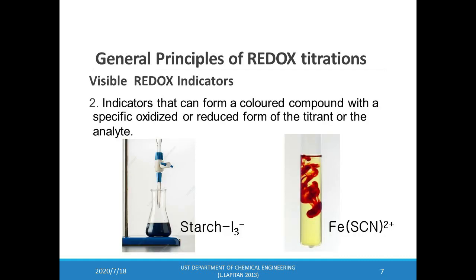The second classification of redox indicators are compounds that form a colored compound with a specific oxidized or reduced form of the titrant or analyte. Starch, for example, forms a dark purple complex with triiodide ions. We can use this distinct color to signal the presence of excess triiodide as titrant — a change in color from colorless to purple. Another example is thiocyanate, which forms a soluble red-colored complex of iron thiocyanate in the presence of iron.